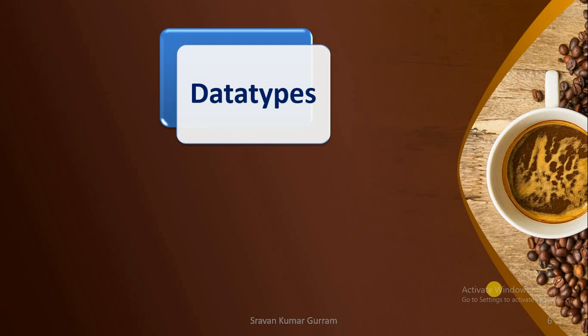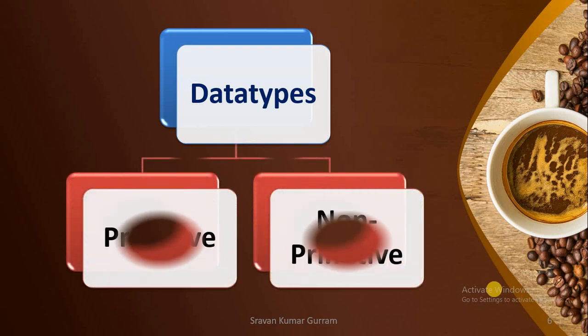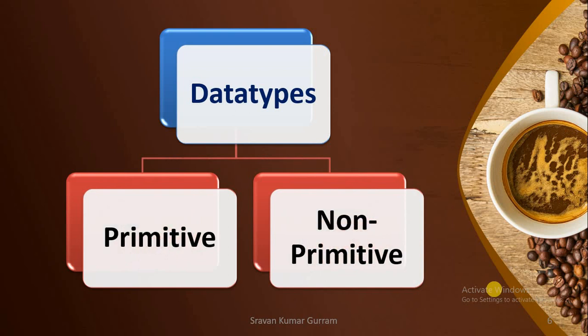Now, what is data type is clear, I hope. Let us see what are the different categories of data types. We have two categories: primitive data types and non-primitive data types. Let us understand what is primitive, what is non-primitive, and what are the differences between these two.